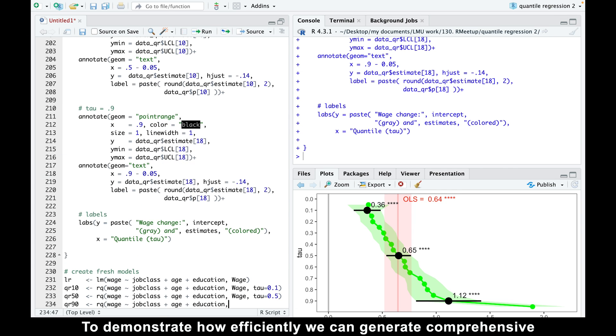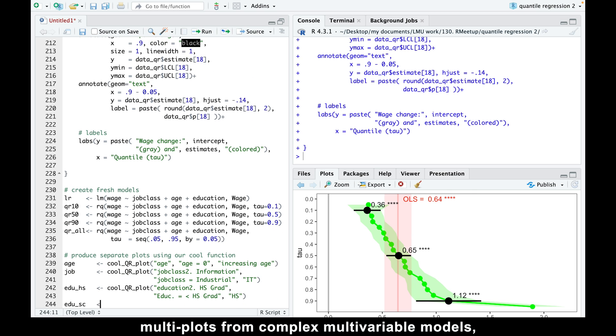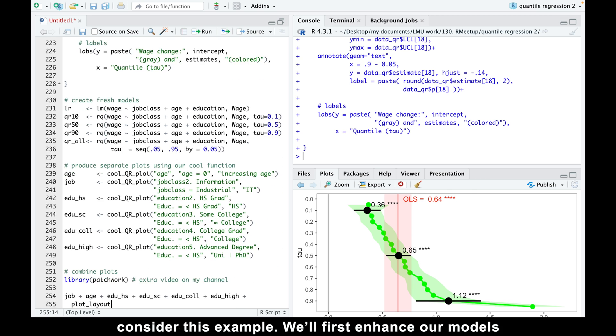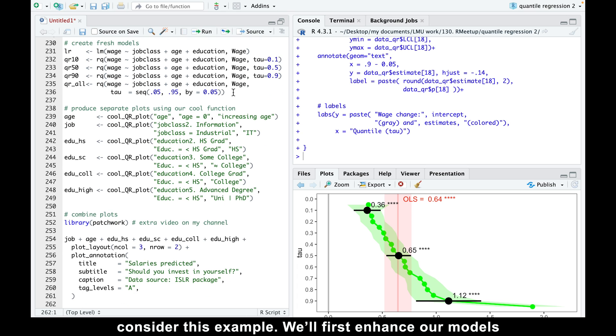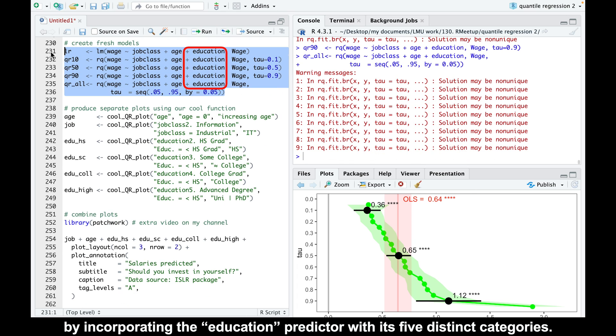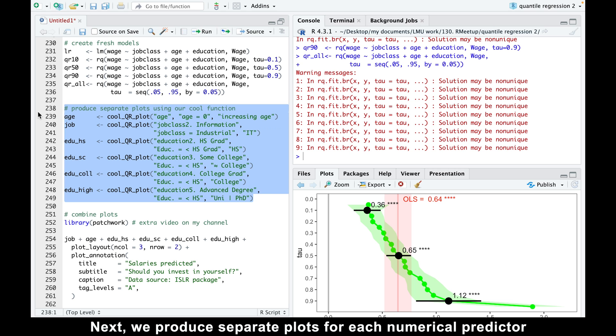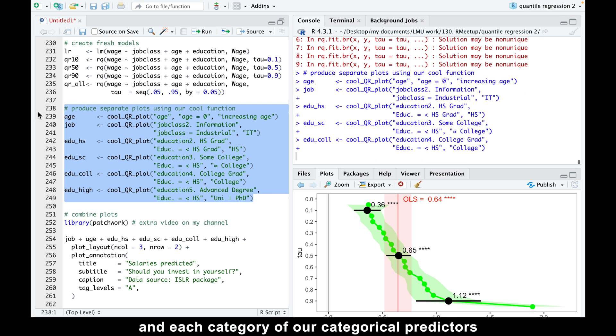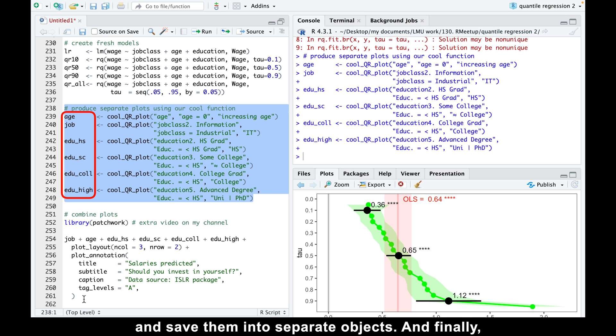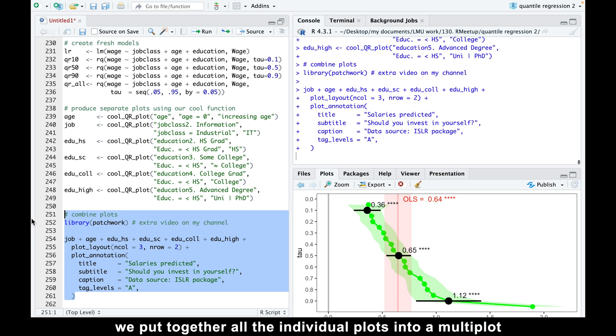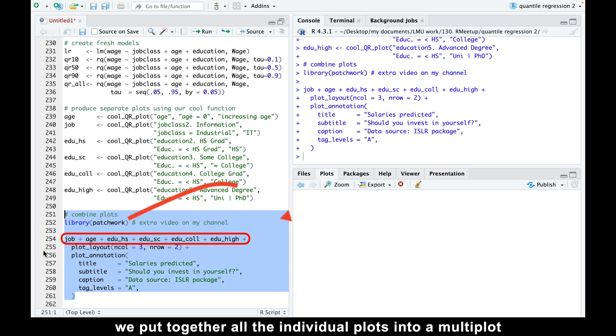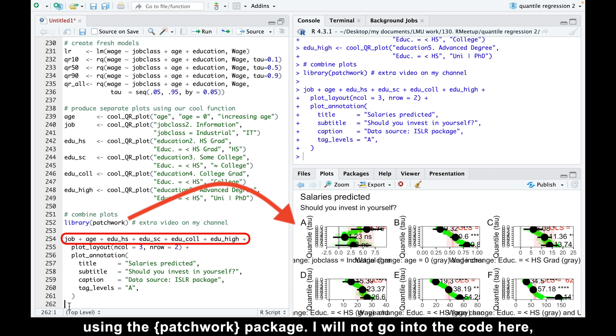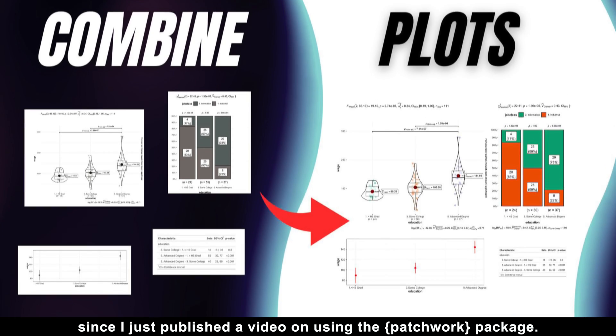To demonstrate how efficiently we can generate comprehensive multiplots from complex multivariable models, consider this example. We'll first enhance our models by incorporating the education predictor with its five distinct categories. Next, we produce separate plots for each numeric predictor and each category of our categorical predictors and save them into separate objects. And finally, we put together all the individual plots into a multiplot using the patchwork package.